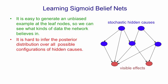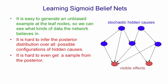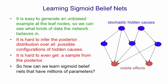The reason for this is that the number of possible patterns of hidden causes is exponential in the number of hidden nodes. It's hard even to get a sample from the posterior, which is what we need if we're going to do stochastic gradient descent. So given this difficulty in sampling from the posterior, it's hard to see how we can learn sigmoid belief nets with millions of parameters, which is what we'd like to do.